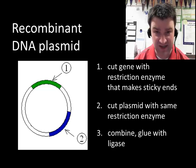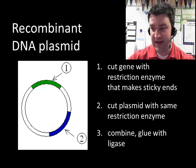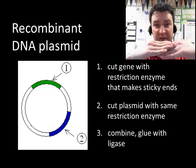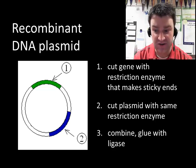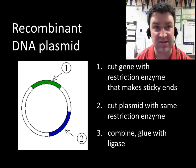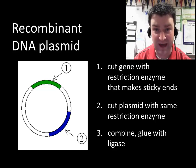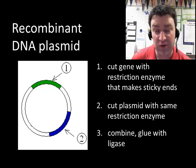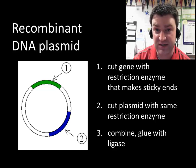Because when we cut the plasmid itself with that same restriction enzyme we have a chance to mix them together and if they both have the same sticky ends then they might have a chance of meeting each other and attracting each other. And then if we simply add DNA ligase the sugar and phosphate backbone will be glued together so that these genes which formerly were not a part of this plasmid now are.